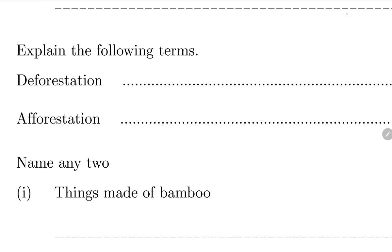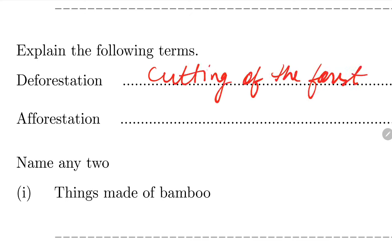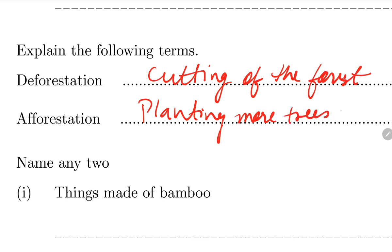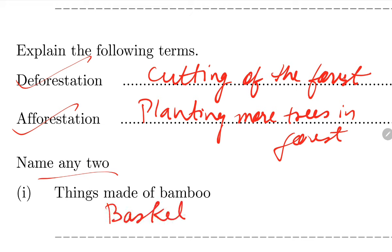Explain the following terms: Deforestation means cutting of the forest. Afforestation means planting more trees in the forest. Both terms are important - deforestation must be stopped and afforestation must be increased. Name any two things made of bamboo that were mentioned in the chapter: bamboo basket, and bamboo cup as seen in the Mizoram story.